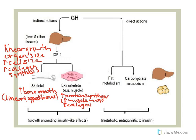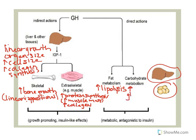Growth hormone's direct actions bind through its receptor on the plasma membrane and have effects on metabolism. For fat, it increases the breakdown of fat — lipolysis — stimulating the degradation of fat so we can use fatty acids for energy and carbohydrate metabolism. It also stimulates gluconeogenesis in the liver, which is the formation of glucose from a non-carbohydrate precursor. At the same time, in adipose tissue and muscle, it decreases glucose uptake.